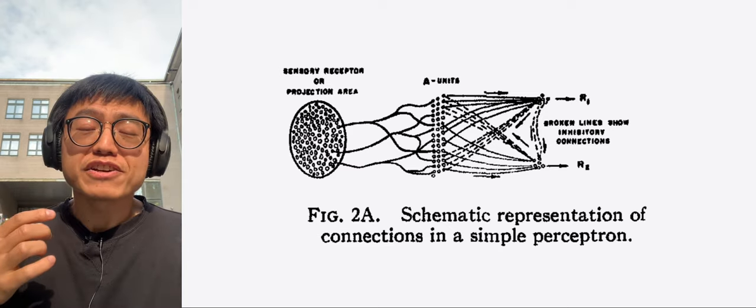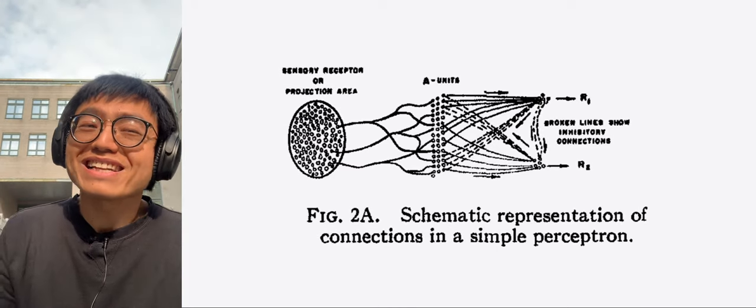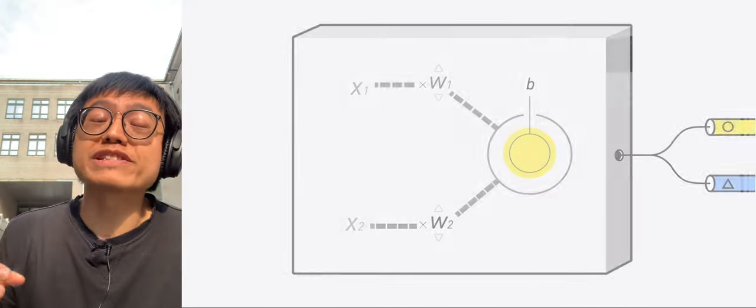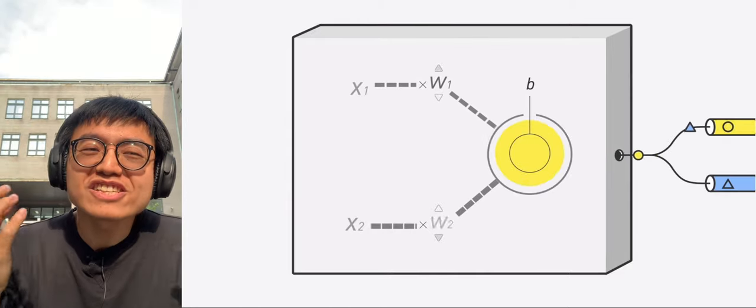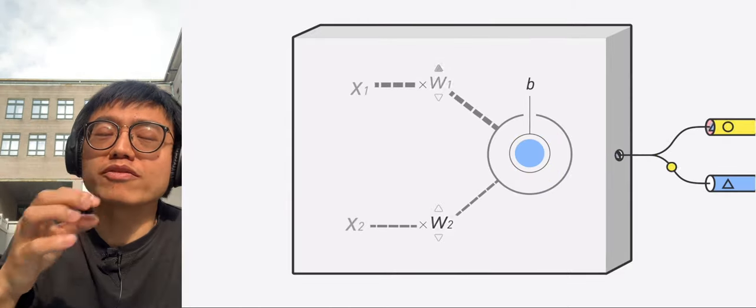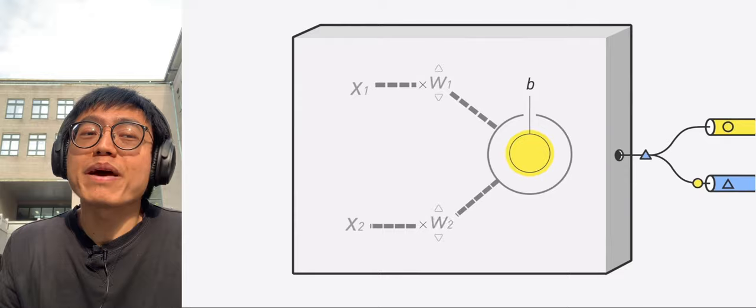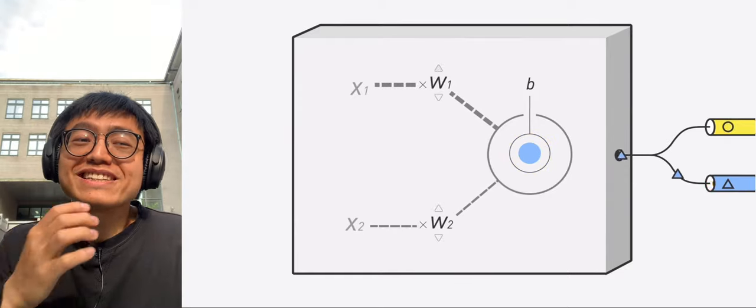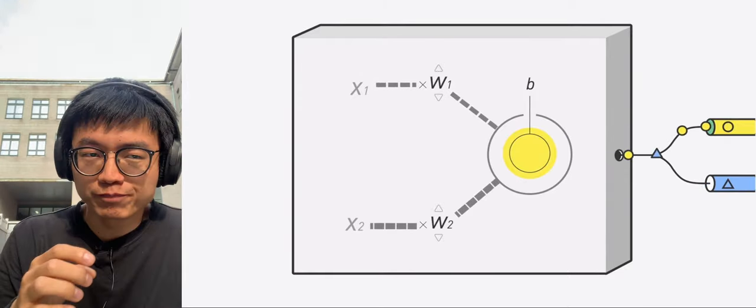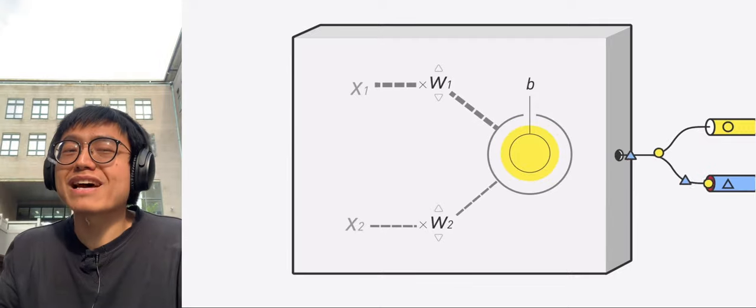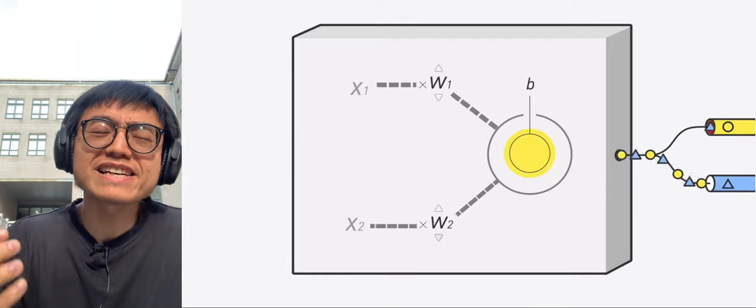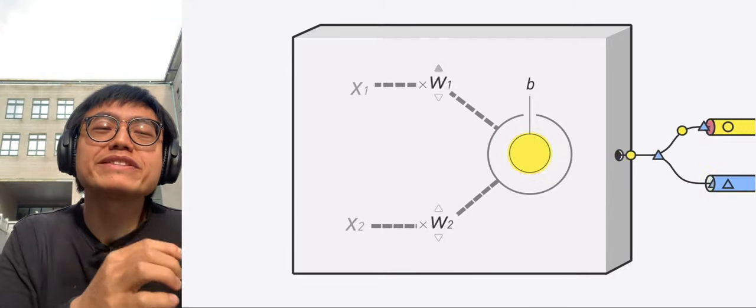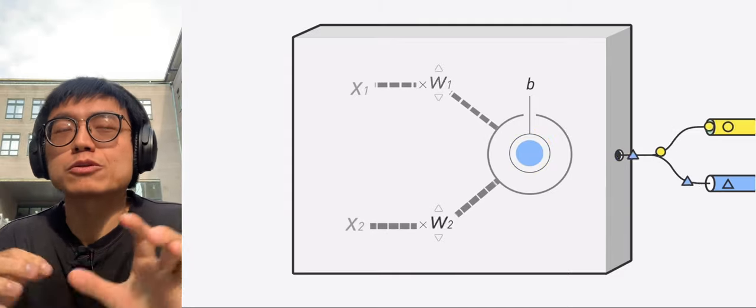As early as 1957, Frank Rosenblatt invented this kind of perceptron. By constantly adjusting the values of the weights W and threshold B, let the linear function Fx equals Wx plus B successfully divide the known data into two categories. But this perceptron model has a fatal flaw.